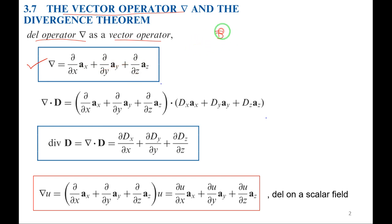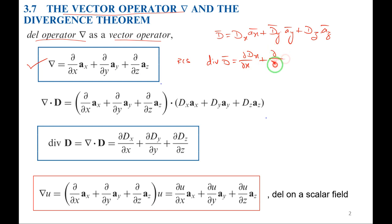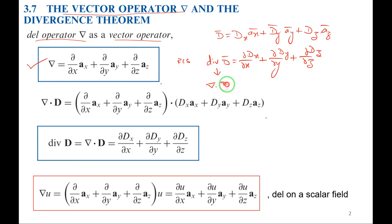The electric flux density D is also a vector. If I operate this del operator on D, written as Dx·Ax + Dy·Ay + Dz·Az, we already know the divergence of D vector in rectangular coordinate system: ∂Dx/∂x + ∂Dy/∂y + ∂Dz/∂z. I want to replace divergence of D vector with the del operator notation — I can write it as del·D vector.